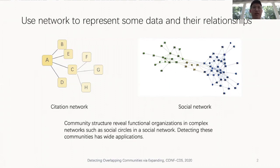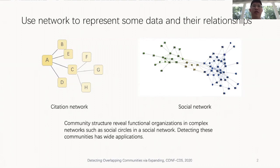Detecting these communities has wide applications. For example, in recommender systems, detecting communities can improve the accuracy of recommendations. In tagging systems, the problem of ambiguity — which means a tag has different meanings in different contexts — often arises, and community detection can figure out the context of an ambiguous tag. Consider the case of social networks, networks of friendships or other acquaintances between individuals, which seem to have communities — subsets of vertices where connections are dense inside but less dense between.